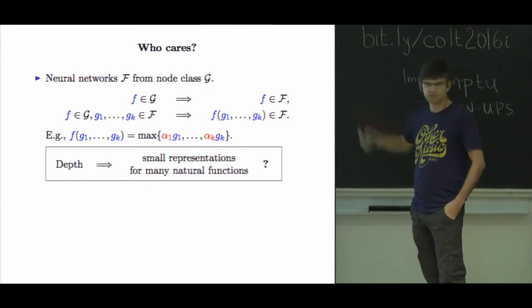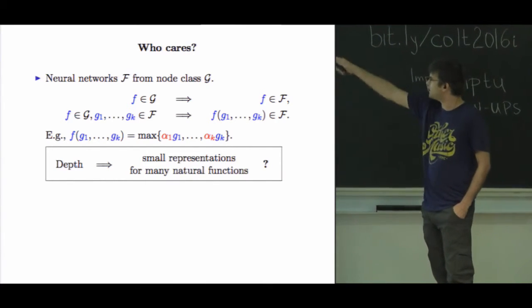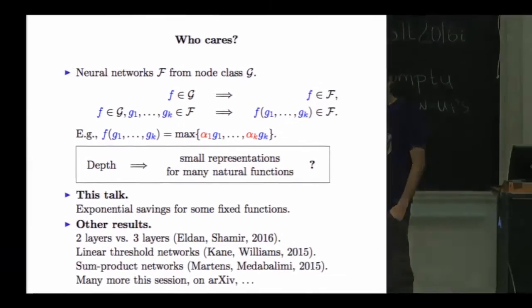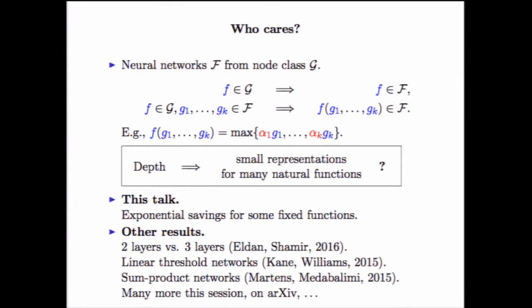You can think of the nestings as the depth. Like I said, I'll do it for depth. I'll say how depth helps, and you just saw a very nice talk. There's a whole session of these functions. There's a nice paper by Daniel Kane and Ryan Williams for linear threshold functions that's pretty recent. There's some product networks, and there's more and more of these coming up on arXiv.